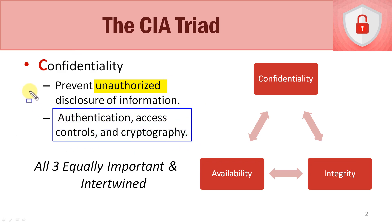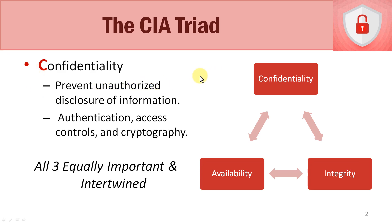So how do we achieve confidentiality? We use several methods. First, authentication — for example, logging into your computer with a username and password. Then access controls, which determine who gets access to what. And we use cryptology — things such as hashing and encrypting data — to ensure that data is protected so unauthorized people cannot access it.